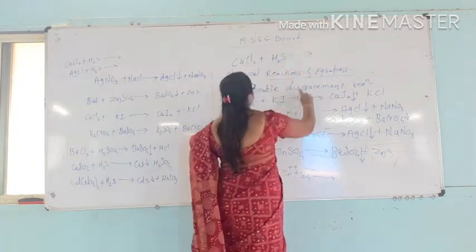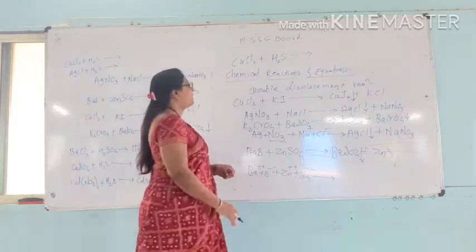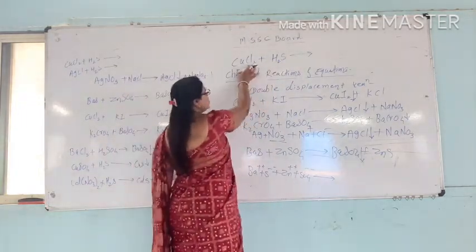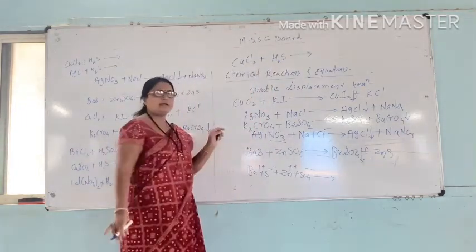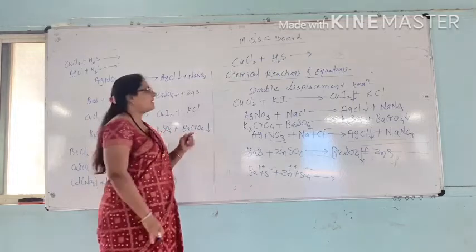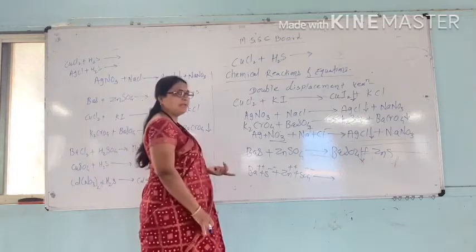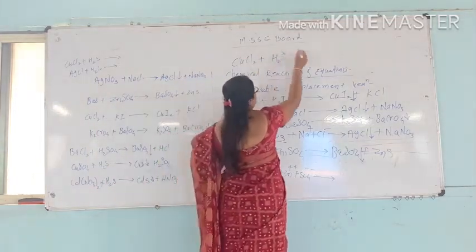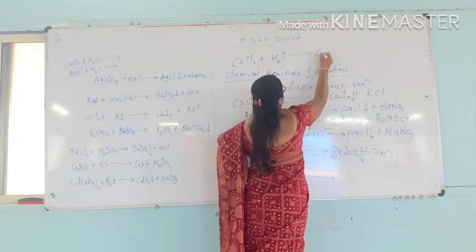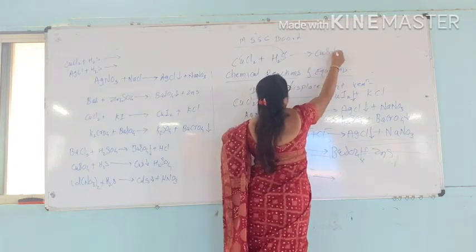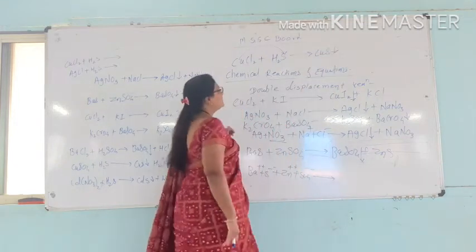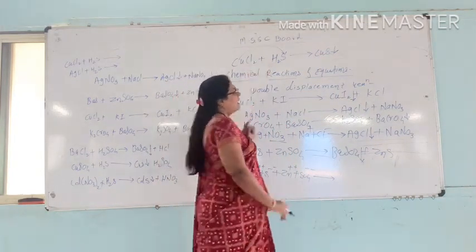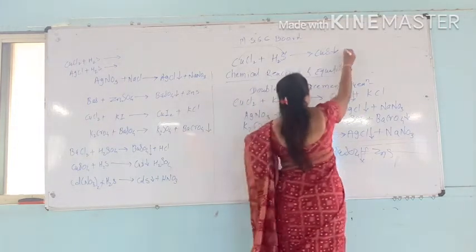Copper chloride plus hydrogen sulfide — the product is copper sulfide, which is a precipitate (PPT), and hydrogen chloride is also produced. Copper sulfide is the precipitate and hydrogen chloride is the other product.